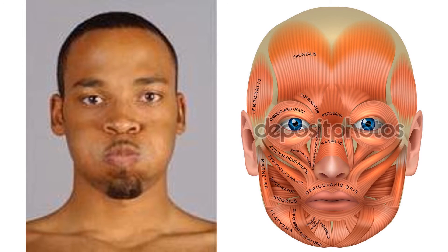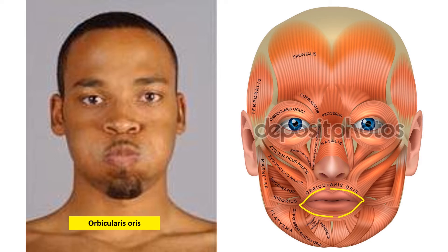If you look at this person on the left, you can see that he is closing his mouth. He is using a muscle called the orbicularis oris. It is a circular muscle like a sphincter around the mouth, and it is tested when you ask a person to whistle — this movement is produced by the orbicularis oris.